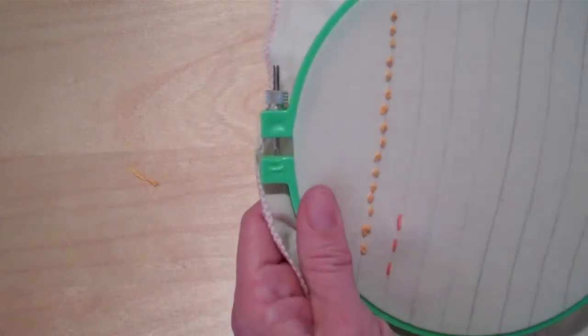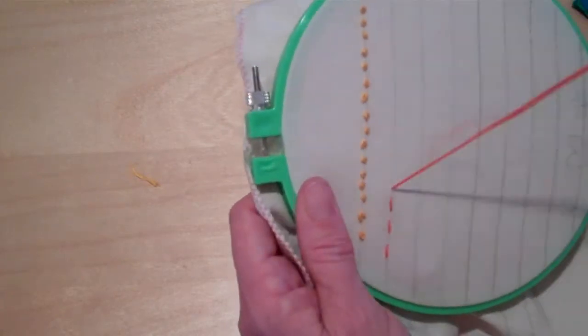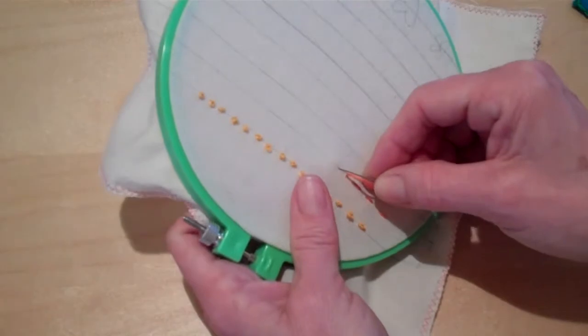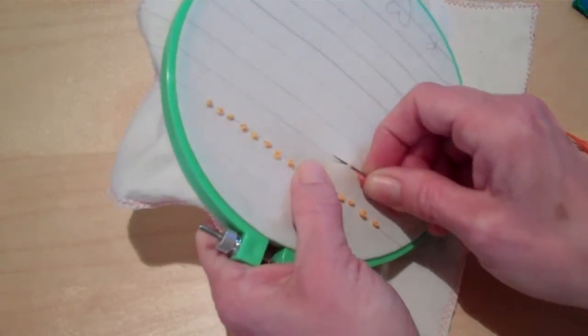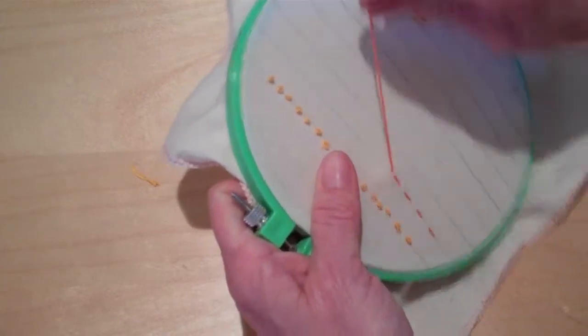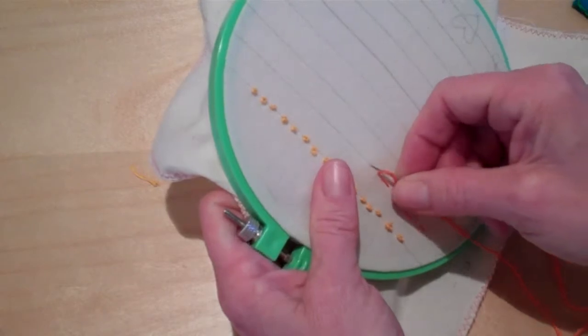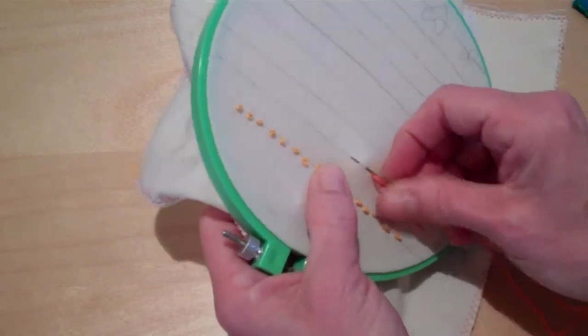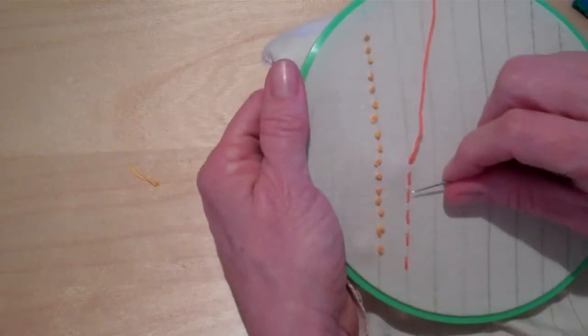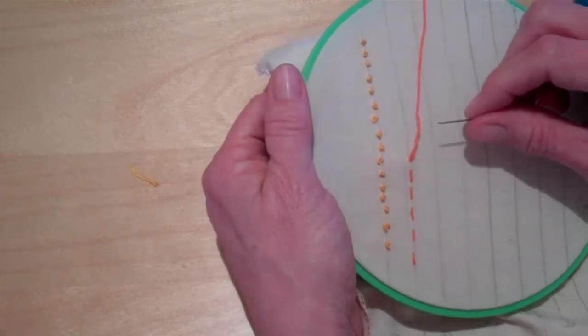You can also work the straight stitch this way if you feel comfortable with it. Instead of making two pulls like that, you can go down and up. So you can work this whole stitch from the top side of the hoop. So down and up. But it looks best if you try to make the space in between equal to each other.